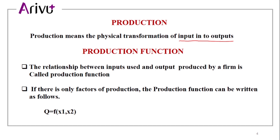What is production function? The relationship between inputs used and outputs produced by a firm is called the production function. If there are only two factors of production, the production function can be written as: q is equal to f of x1, x2.